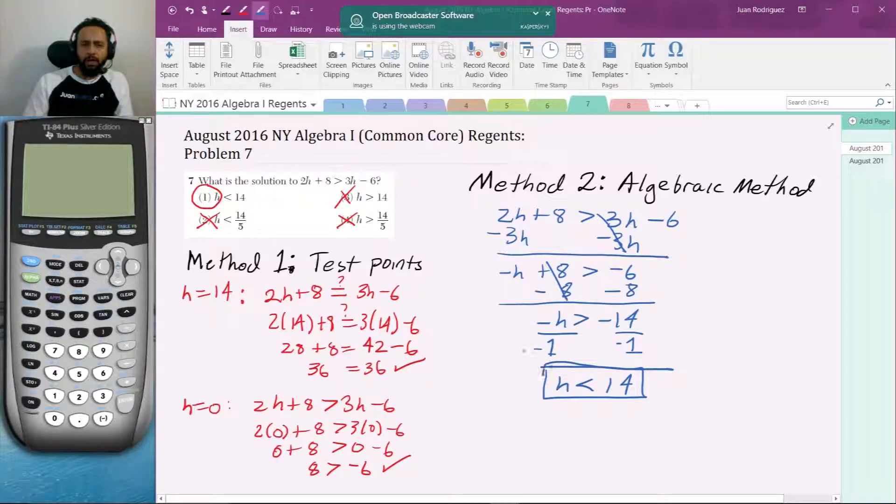Divide by negative 1 and you got H is less than 14, which is the same answer as we got before. Okay, and so that confirms that this is the right answer. And we can check by choosing any number that's less than 14, we've already checked H equals 0, and let's say H equals 10, plug it in. You plug it in, check the answer's correct, it is in fact correct, so the answer is choice one.